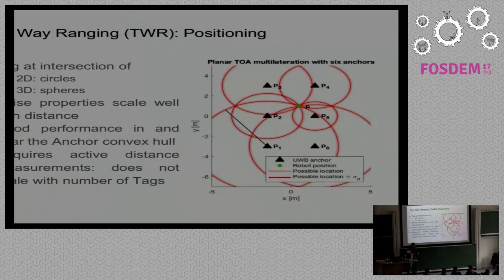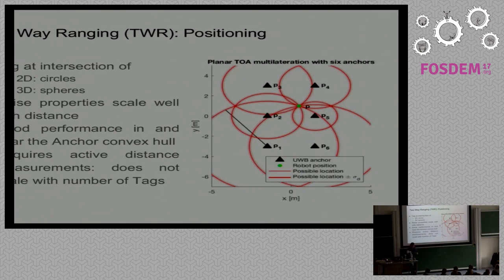When we have distances, we place ourselves on a sphere around each anchor. Ranging with multiple anchors gives multiple spheres and we are at the intersection — that's how we calculate position. This behaves nicely and works even outside the vicinity of the anchors. The drawback for swarm research is that each tag must communicate with anchors and synchronize to avoid transmitting at the same time. This doesn't scale well — we've run four copters, could probably run ten with optimization, but not 50 or 100.